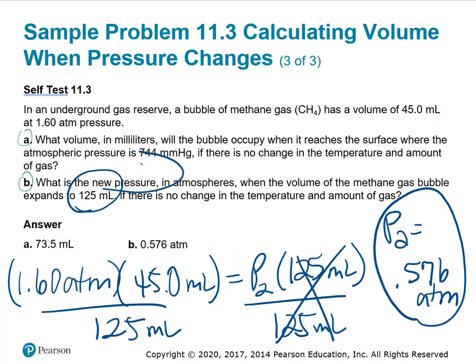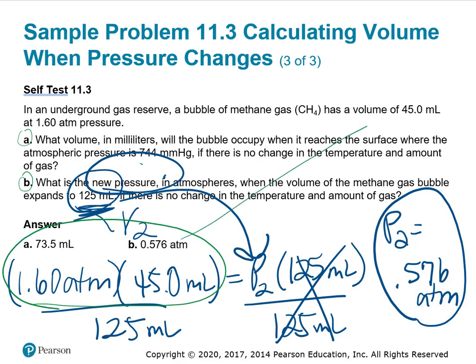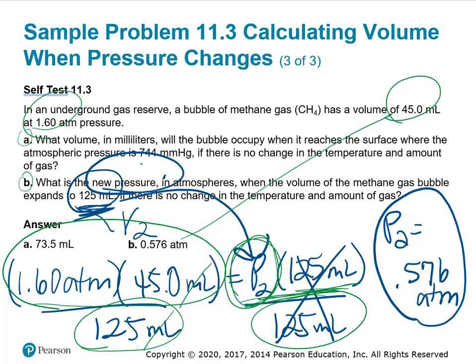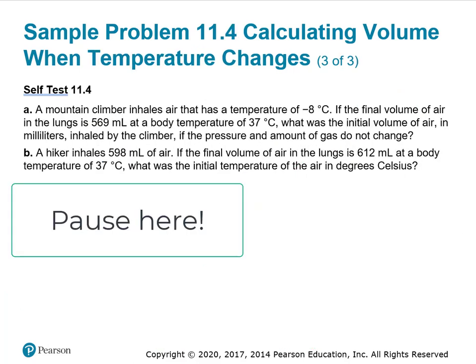Part B wants the new pressure, so we're finding P2 when the volume of the methane bubble expands to 125 milliliters. That's our V2. I set up P1V1 with our initial volume and pressure, and P2 is the question mark, and V2 is 125. Divide both sides by 125. That cancels milliliters, leaving 0.576 atmospheres.